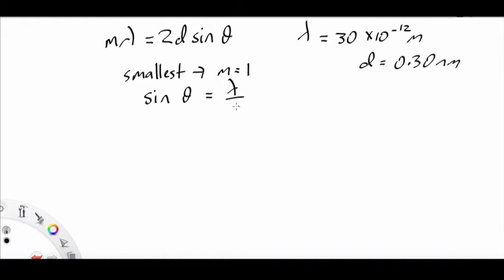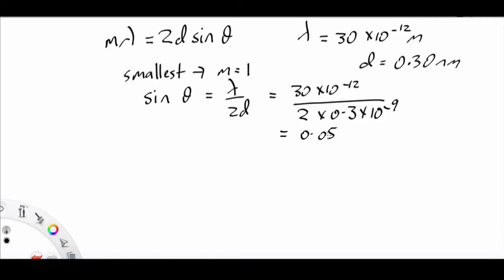So we have sin theta equals lambda over 2d, which is 30 by 10 to the minus 12 over 2 times 0.3 times 10 to the minus 9, which is 0.05. That gives us theta is 2.87, which is taken down to two significant figures, about 2.9 degrees.